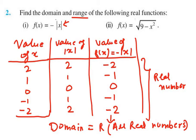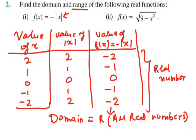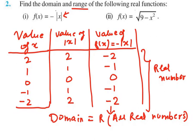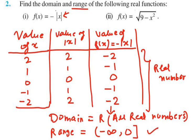Now the next thing we need to find is the range. The range is either 0 or a negative number, so the range can be written as the interval from minus infinity to 0, with an open bracket at minus infinity and a closed bracket at 0. So range is (-∞, 0].